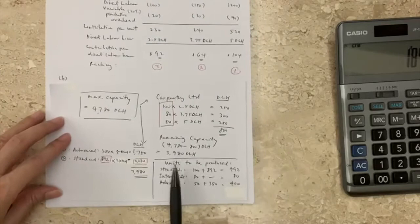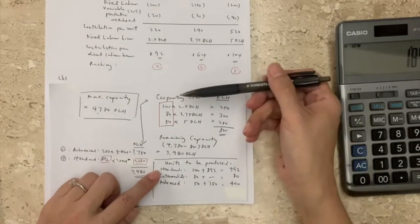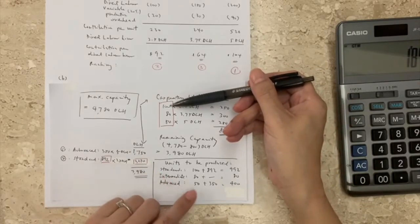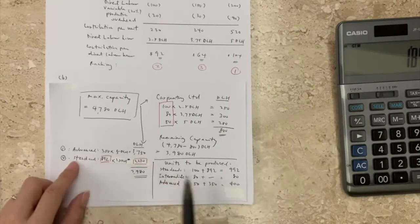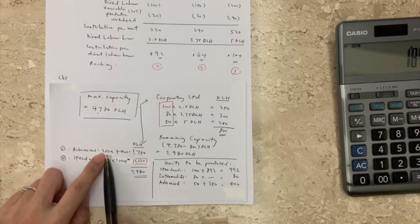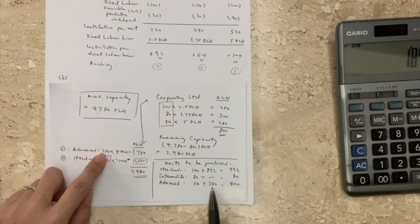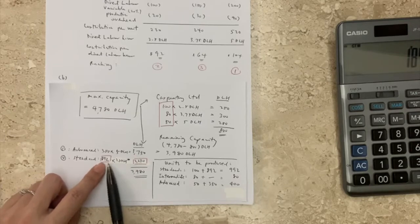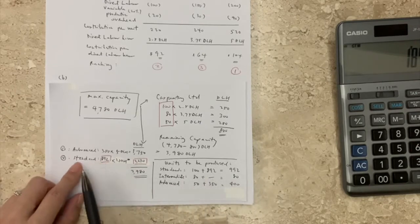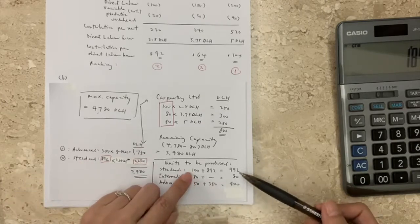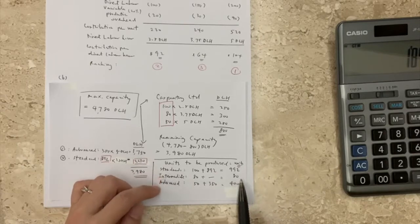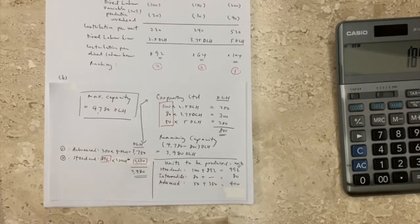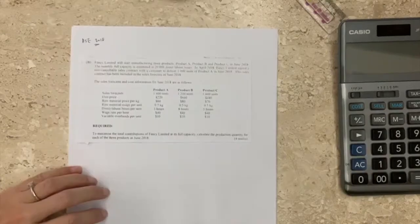So here is the final analysis — units produced for each model. From the Carpentry contract: 100 standard, 80 intermediate, 50 advanced. For other customers: 350 advanced and 892 standard. We have no more resources left for intermediate for other customers. The final answer: standard 992 units, intermediate 80 units, and advanced 400 units. This is how we make decisions to allocate limited resources to maximize company profits.